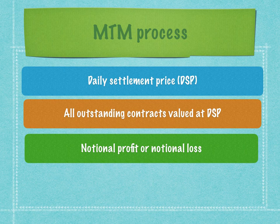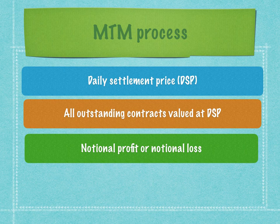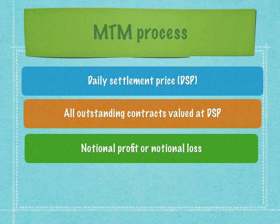For example, if you bought a contract worth 1,000 rupees in the morning and by the end of the day it has become 900 rupees, then as per the daily settlement price it is 900 rupees — meaning you have suffered a notional loss of 100 rupees. The next morning when you re-enter the contract, you will know that you already have a loss of 100 rupees on your MTM margin.